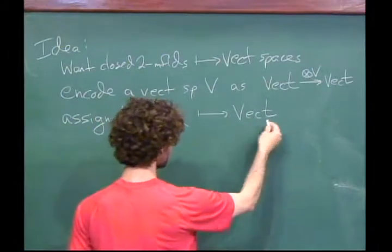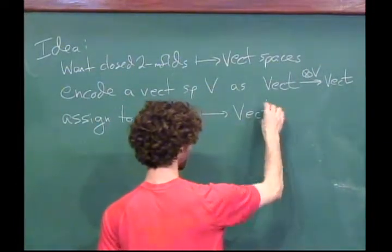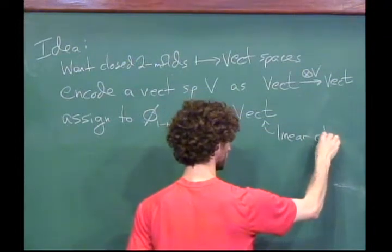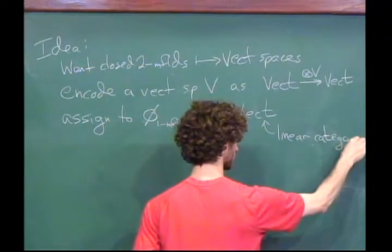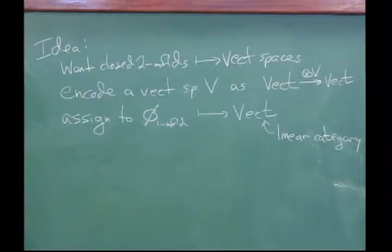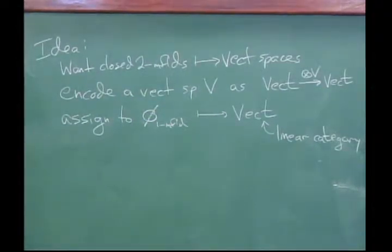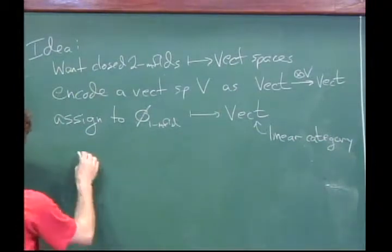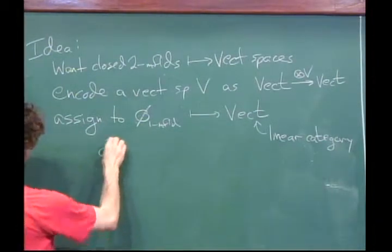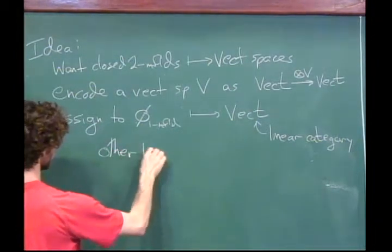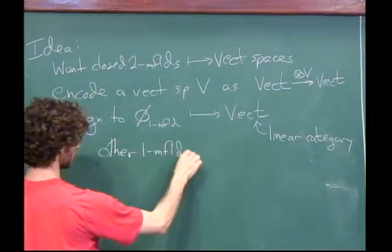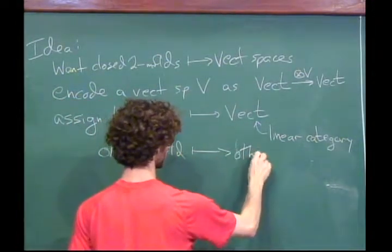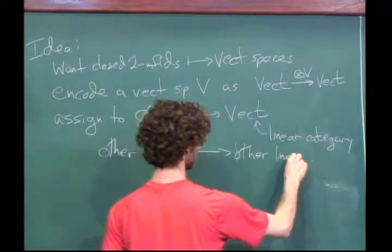In this bordism category we have the empty one-manifold, and what we're going to do is assign to that empty one-manifold the category of vector spaces. This kind of achieves what we wanted, because now if I have a closed two-manifold it has empty boundary and so it's going to be some map from Vect to Vect, which is the kind of thing that can be encoded as an individual vector space. Other one-manifolds besides the empty one manifold are themselves going to go to other linear categories.